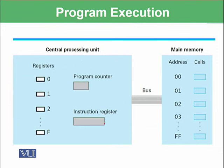If you see this diagram, which we have already seen previously, we have a central processing unit here and the main memory, and we have a bus for data transfer. Here are the two special purpose registers: program counter and instruction register. In the main memory, in different cells, the instructions are placed.